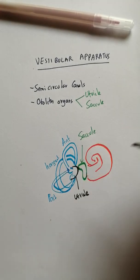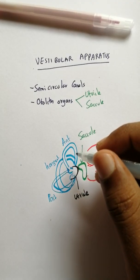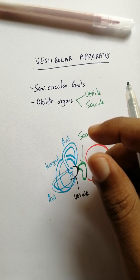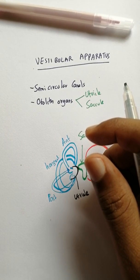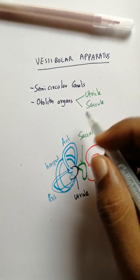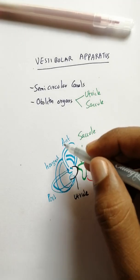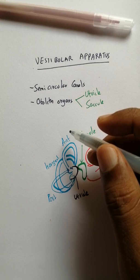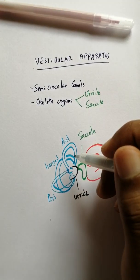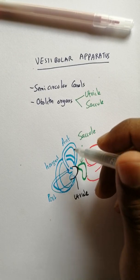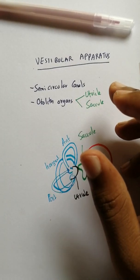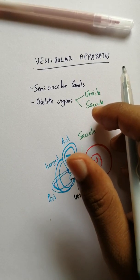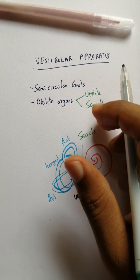If you look at the otolith organs, they are meant to sense linear acceleration, while the semicircular canals sense rotational acceleration. These are located in the head, so they give us an idea of the position of the head and the body in total.